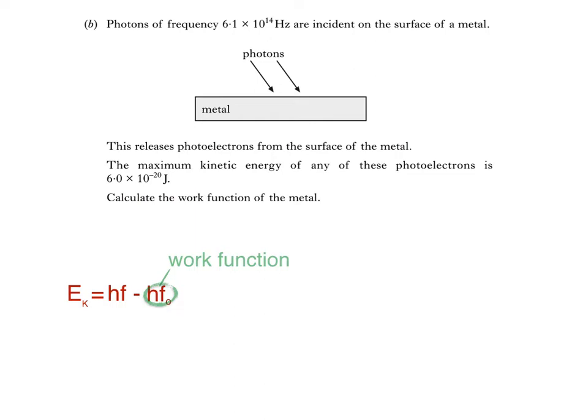The work function is the minimum energy of a photon required to cause photoemission, the release of an electron from a metal surface when light of sufficient energy is incident on it. The term F0 is known as the threshold frequency, which is the minimum frequency of a photon required to cause photoemission. Since we're asked to find work function, we can rearrange the equation to make this the subject.